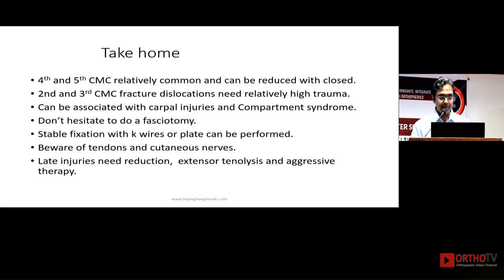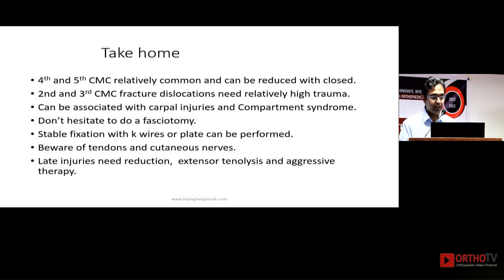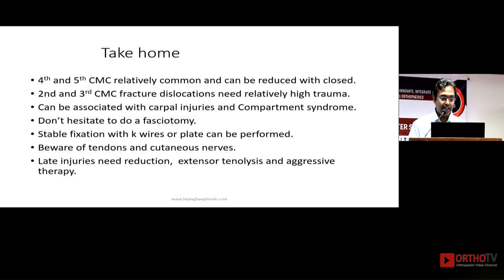The take-home message: the fourth and fifth carpometacarpal joints are relatively common injuries; they are mobile joints and can be reduced with closed means. Second and third carpometacarpal fracture dislocations require relatively high trauma, can be associated with carpal injuries and compartment syndrome — don't hesitate to do a fasciotomy. Stable fixation with K-wires or a plate can be performed. Beware of tendons and cutaneous nerves. Late injuries need reduction, tenolysis, and aggressive therapy.